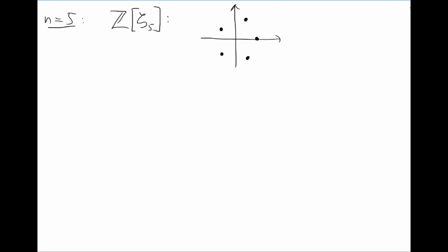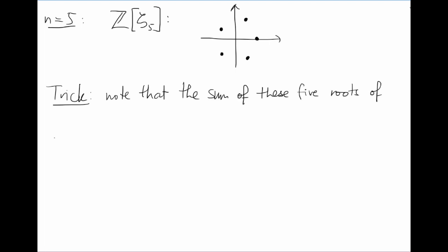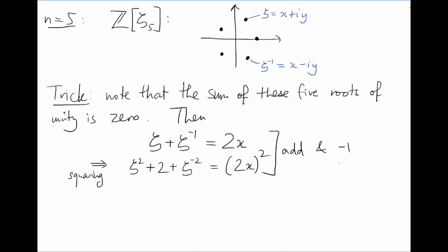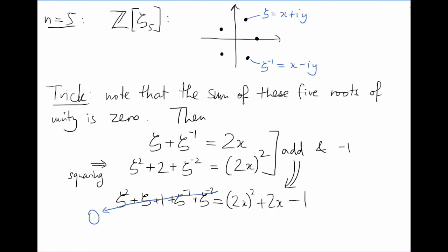Here's the trick to calculate the coordinates of zeta. We're going to use the fact that the sum of all five roots of unity equals 0. Let's write zeta equals x + iy so that its conjugate zeta inverse is x − iy, and then zeta plus zeta inverse is 2x. If we square both sides, we get zeta squared plus 2 plus zeta to the minus 2 equals (2x)². Adding these two equations and subtracting 1 forces the left-hand side to equal the sum of all five roots of unity, which is 0. The right-hand side is now 2x² + 2x − 1, giving a quadratic in 2x with solution x = (−1 + root 5)/4.